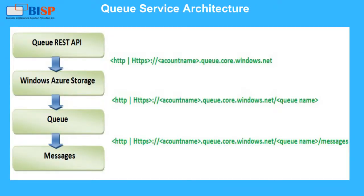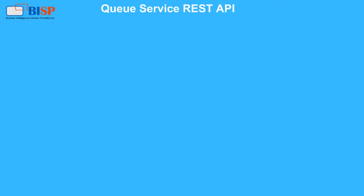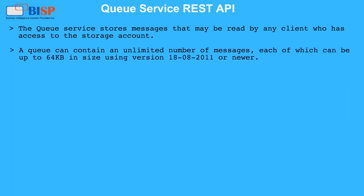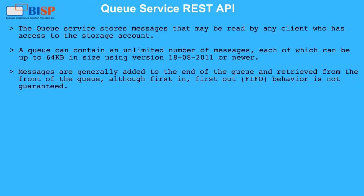Queue Service Architecture: In this architecture you can see the Queue REST API, Windows Azure Storage, and Queue Messages. The queue service stores messages that may be read by any client who has access to the storage account. A queue can contain an unlimited number of messages, each of which can be up to 64 KB in size using version 18 August 2011 or newer. Messages are generally added to the end of the queue and retrieved from the front, although First In, First Out FIFO behavior is not guaranteed.